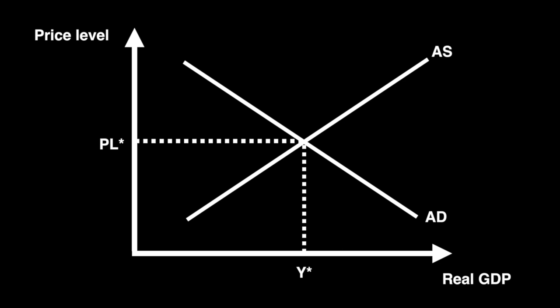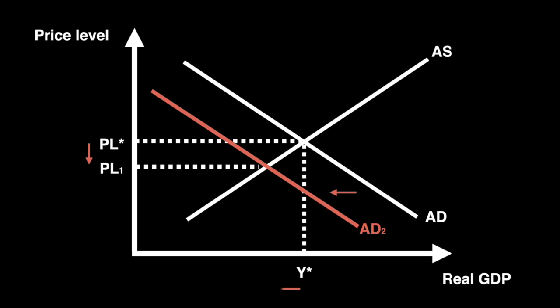If there is a fall in any of the components of aggregate demand, such as government spending, then ceteris paribus aggregate demand will decrease and shift leftwards. This reduction in demand pressure causes the price level to fall from PL star to PL1. The corresponding fall in real GDP is a movement of output from a level of Y star to Y1.